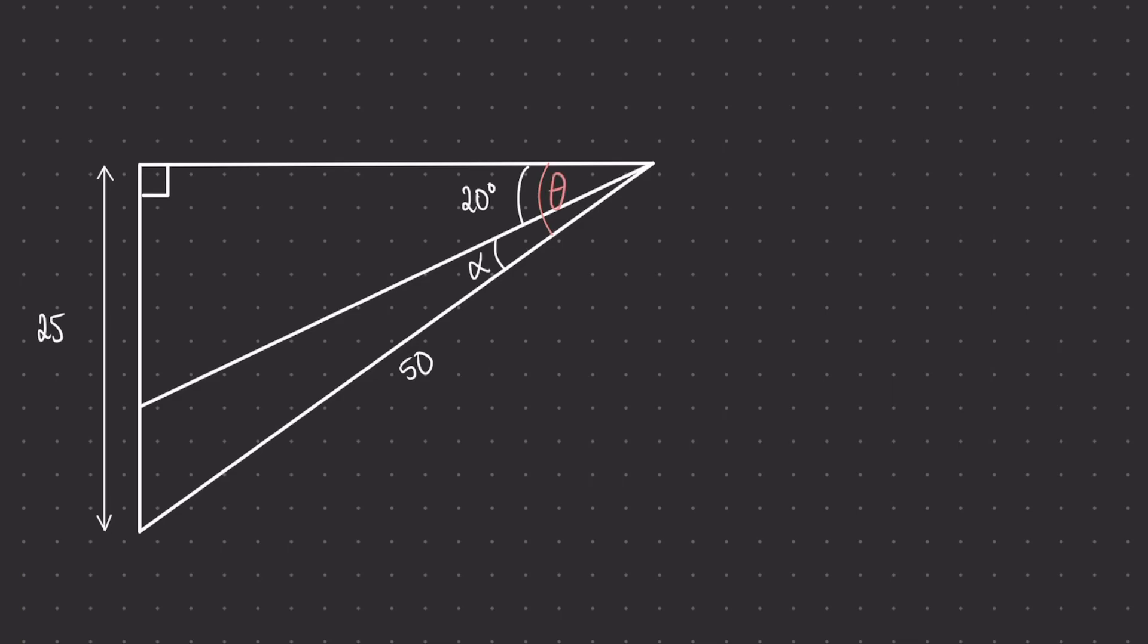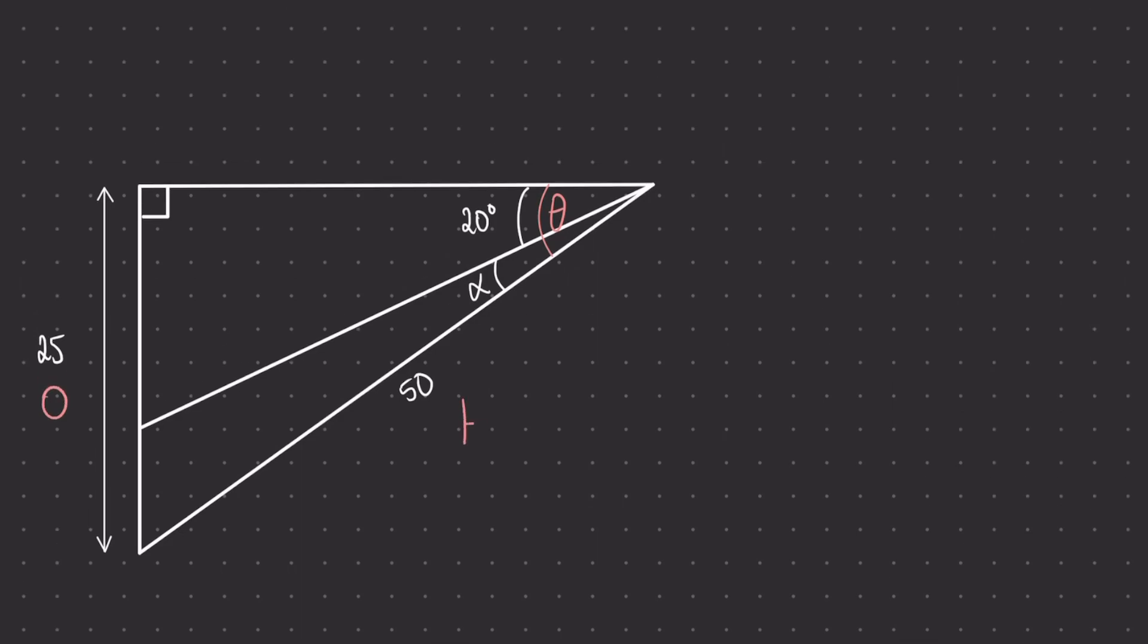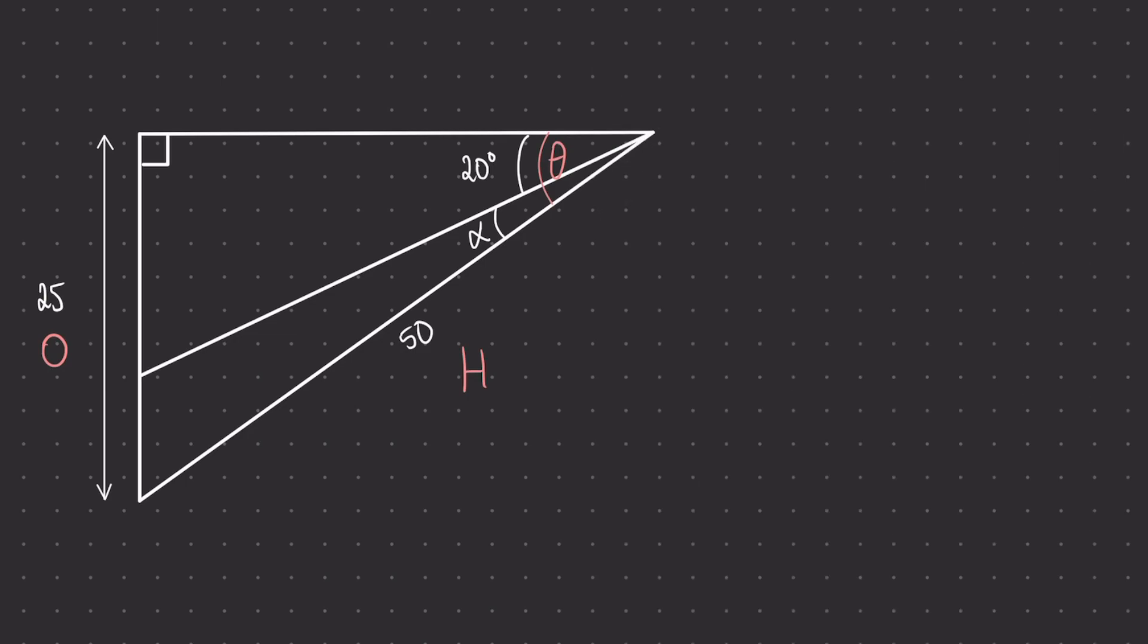Opposite theta is 25, so that is the opposite, and opposite the right angle is 50, so that is the hypotenuse. The equation that ties together the opposite in the hypotenuse is sine, replacing the variables that we already know, and then applying inverse of sine to both sides. We find that the answer is 30 degrees.